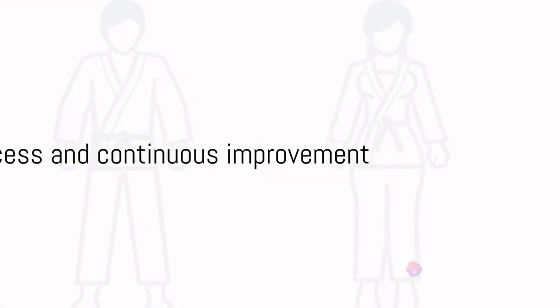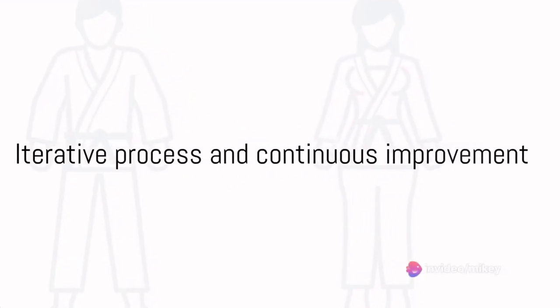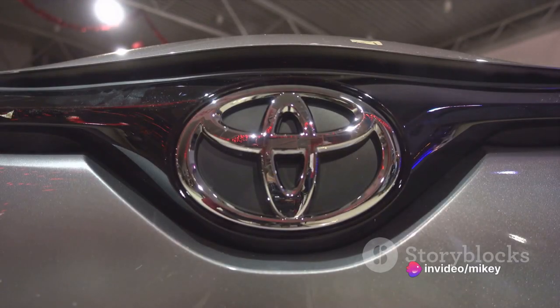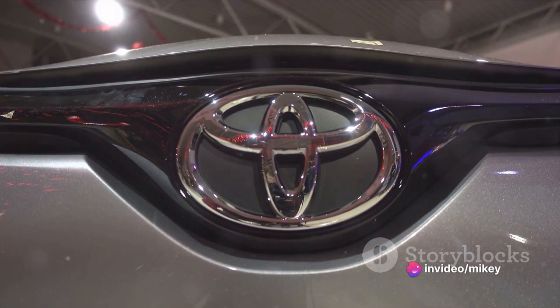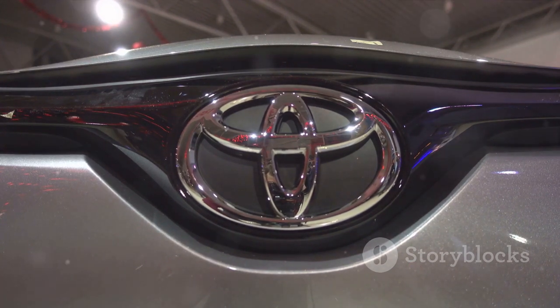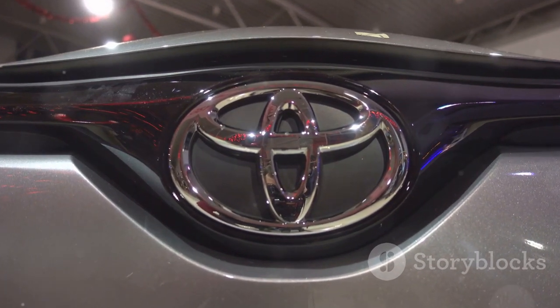The ninth step involves an iterative process. Repeat the cycle. Continuously cycle through the improvement kata steps, refining your targets, experimenting with different approaches, and adjusting based on what you learn.